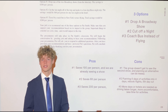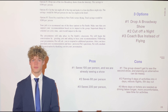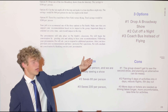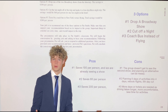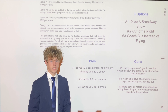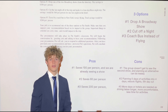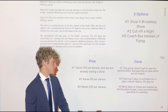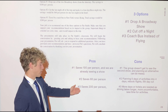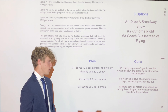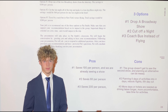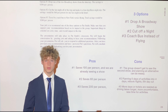After looking at the details of our problem, we can begin to select one of the three options as our solution. The three options are: number one, drop a Broadway show; number two, cut off a night; and number three, take a coach bus instead of flying. Dropping a Broadway show saves $100 per person, and we are already seeing one show, but planning an alternative can be messy. Cutting off a night saves $60 per person, but condensing five days of activities into four days is difficult and requires rebooking flights. Taking a coach bus saves over $200 per person, but takes more days, requires rebooking hotels, and leaves less time for activities. We can use these pros and cons to deduce that option number one is probably the best path forward.